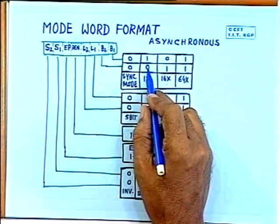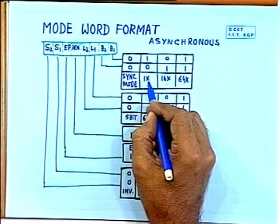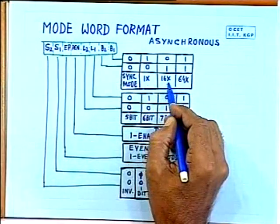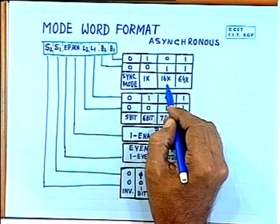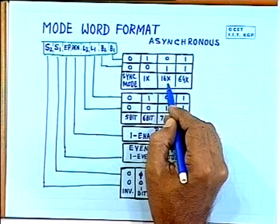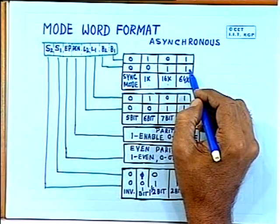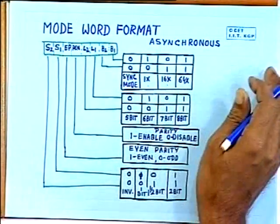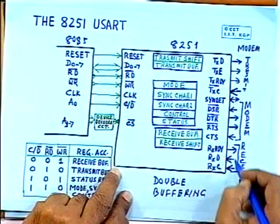When bits 0–1 are 01, the baud rate equals the clock frequency (1x). When they are 10, the baud rate is clock ÷ 16 (16x). When 11, the baud rate is clock ÷ 64 (64x). So you can have three different baud rates for a particular clock frequency connected to transmit or receive.